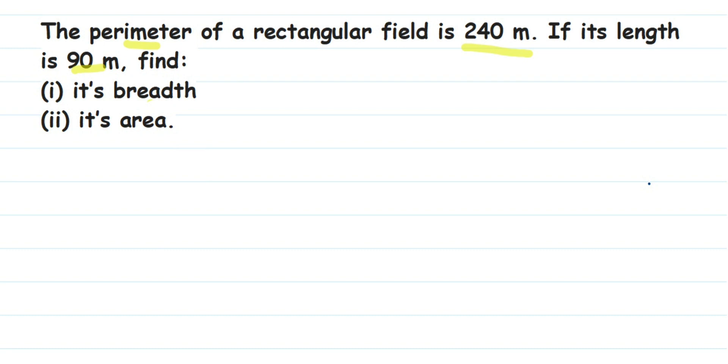Given: Perimeter = 240 meters. We know that the perimeter formula is 2(l + b). We're going to substitute what we know here. They have also given the length, which is 90 meters, so we'll substitute that value.